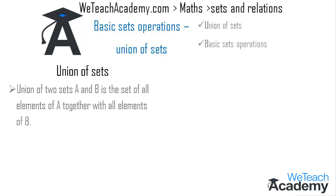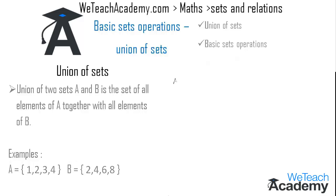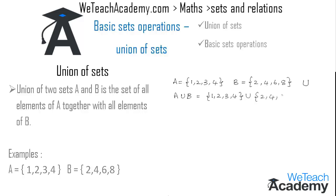The union of two sets A and B is the set of all the elements of A together with all the elements of B. Now let us solve an example. We have set A equal to {1, 2, 3, 4} and set B equal to {2, 4, 6, 8}. The union of sets is denoted with the letter U. While writing the union, elements common to both sets are written only once.